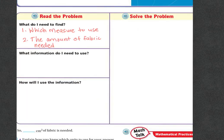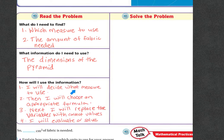So what do I need to find? First I need to find which measure to use and I need to find the amount of fabric needed. What information do I need to use? The dimensions of the pyramid. Next, how will I use the information? First I will decide what measure to use. Then I will choose an appropriate formula. Next, I'll replace the variables or the letters with the correct values or the numbers and then I will evaluate or solve.